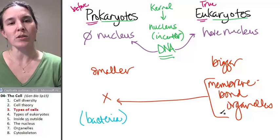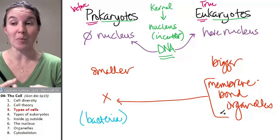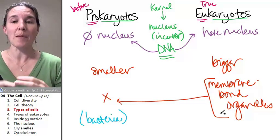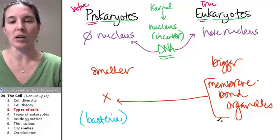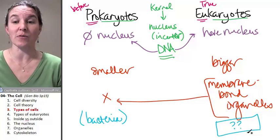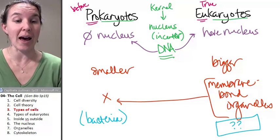Examples of eukaryotes. You are a eukaryote. A plant is a eukaryote. And that's the next topic. We're going to look at what are all the possible different eukaryotes that we can have.